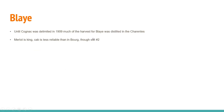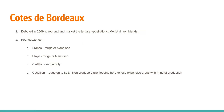The Côte de Bordeaux AOP debuted in 2009 to rebrand and market the tertiary appellations. These are Merlot-driven blends with four sub-zones: Francs for Rouge or Blanc Sec, Blaye for Rouge or Blanc Sec, Cadillac for Rouge only, and Côte de Bordeaux Castillon for Rouge only. You see a lot of Saint-Emilion producers flood into Côte de Bordeaux Castillon because it's a less expensive area with really great production — so look for those wines.